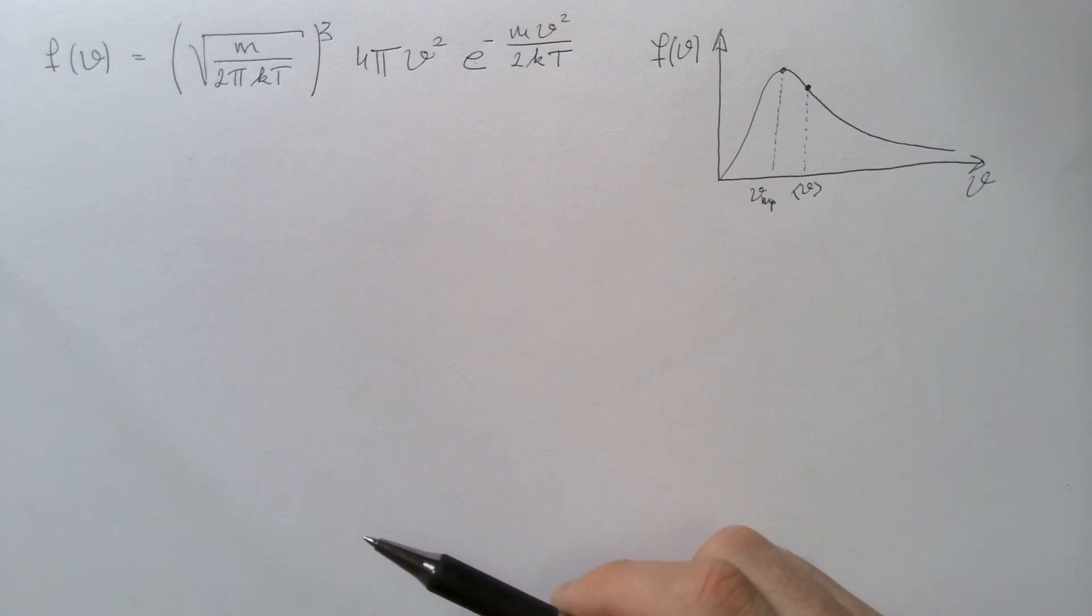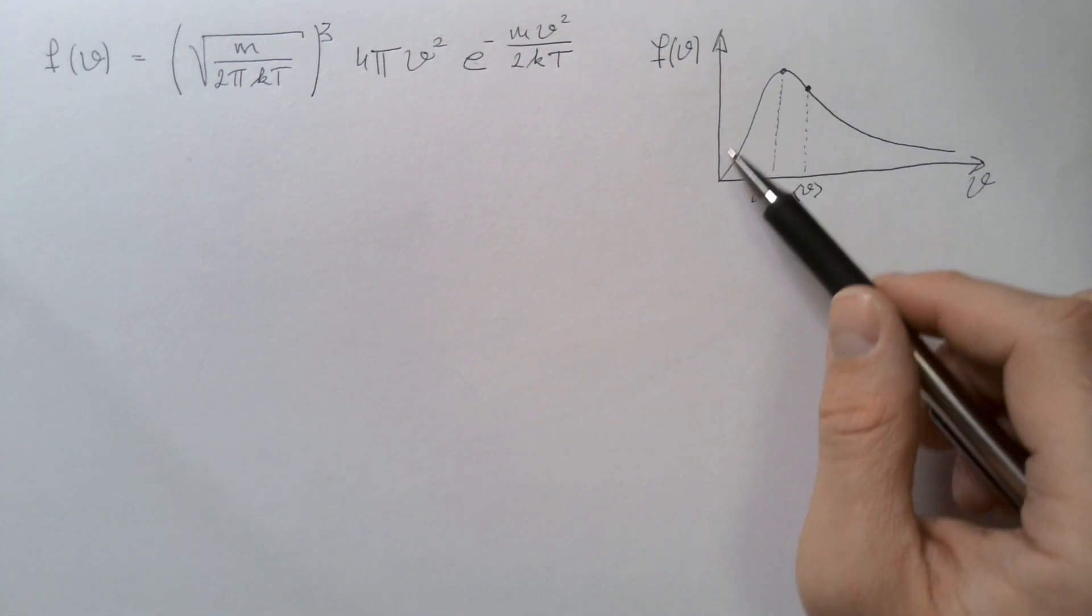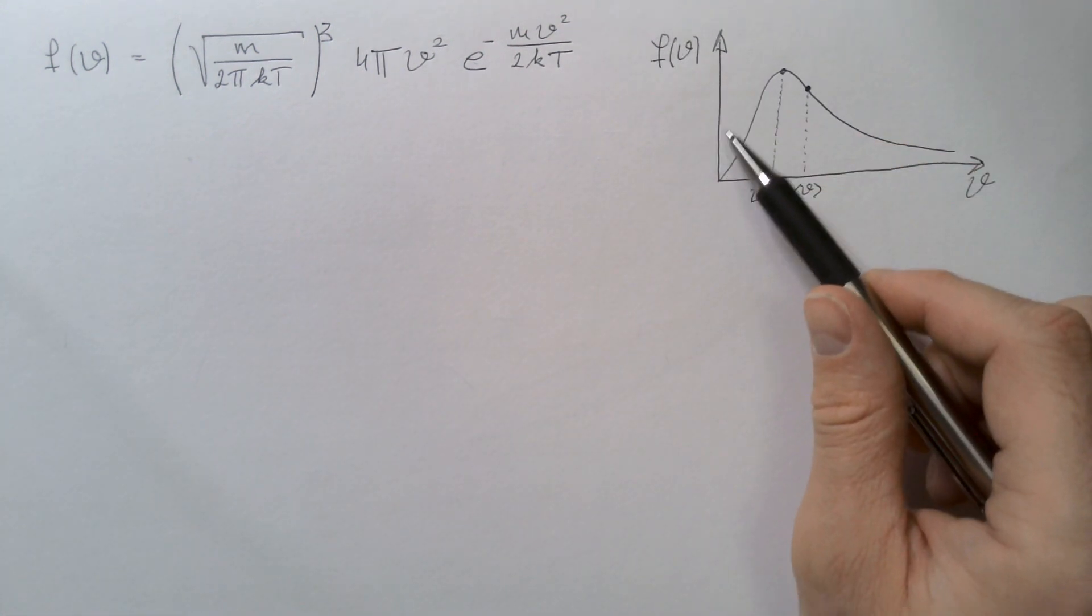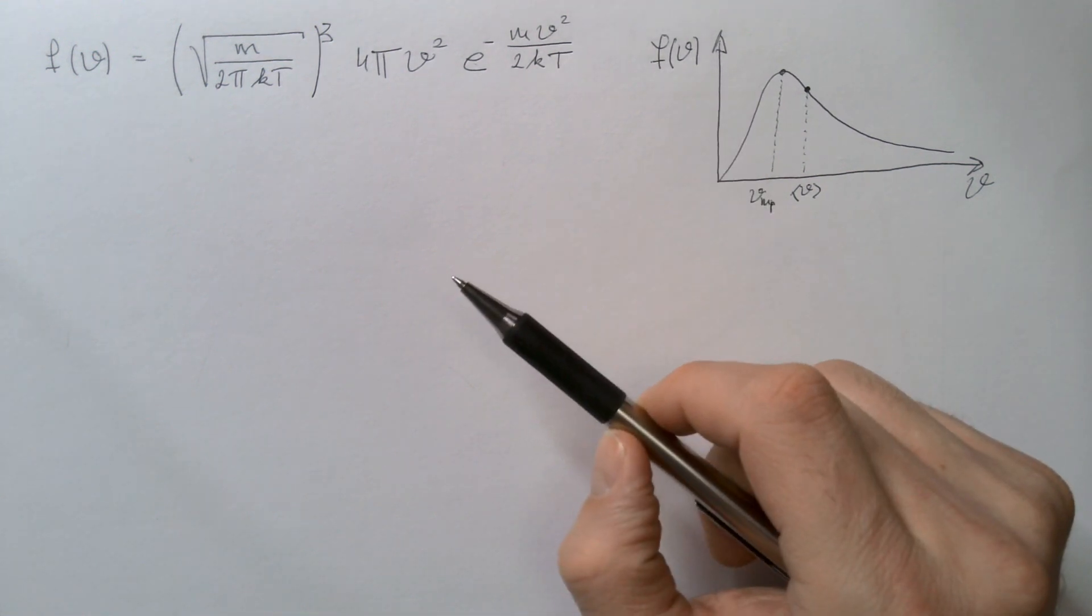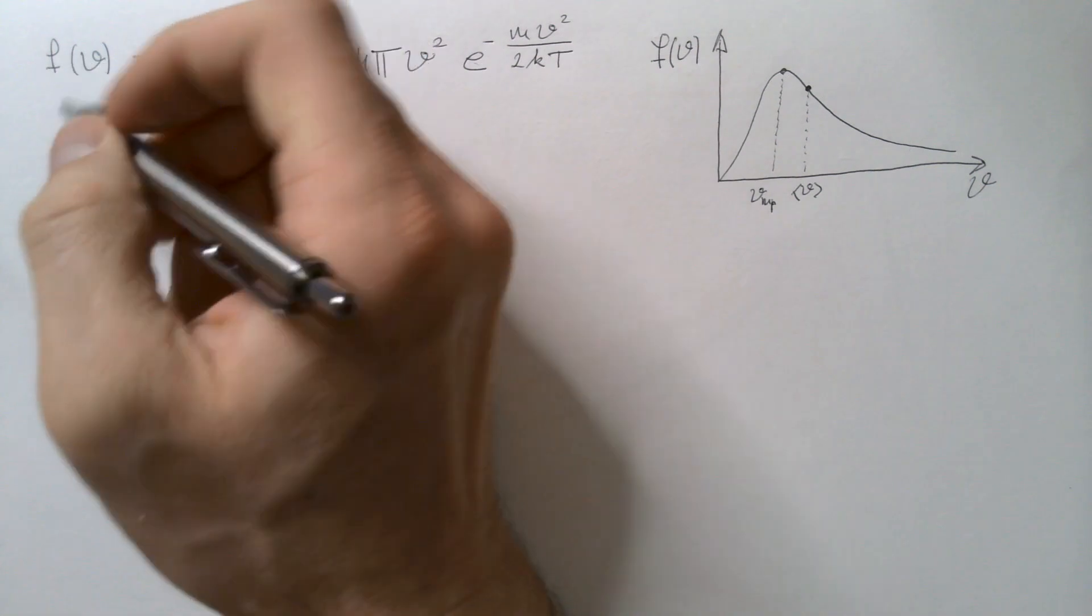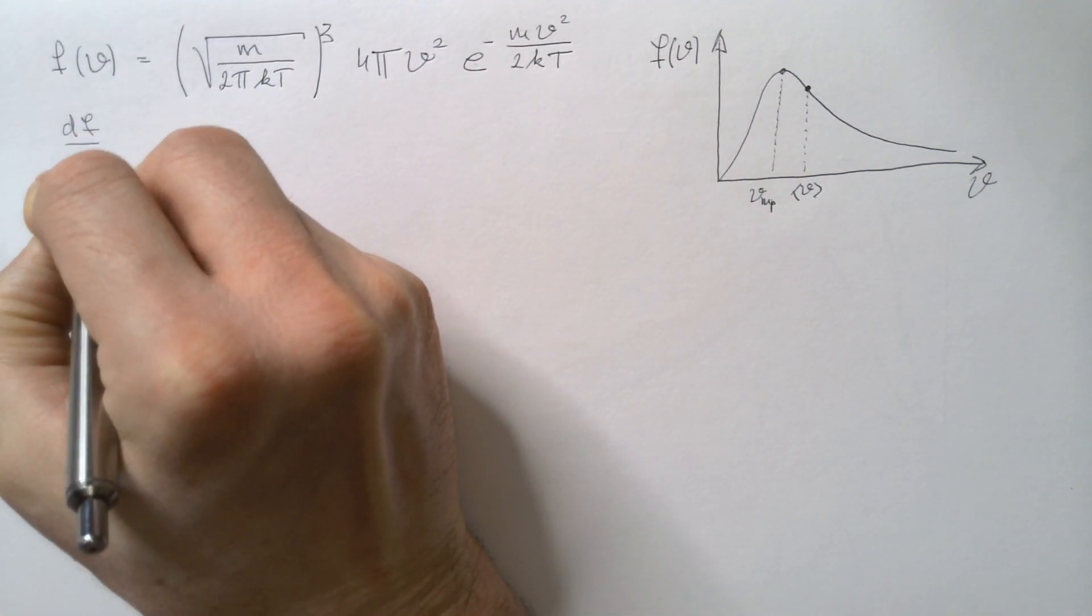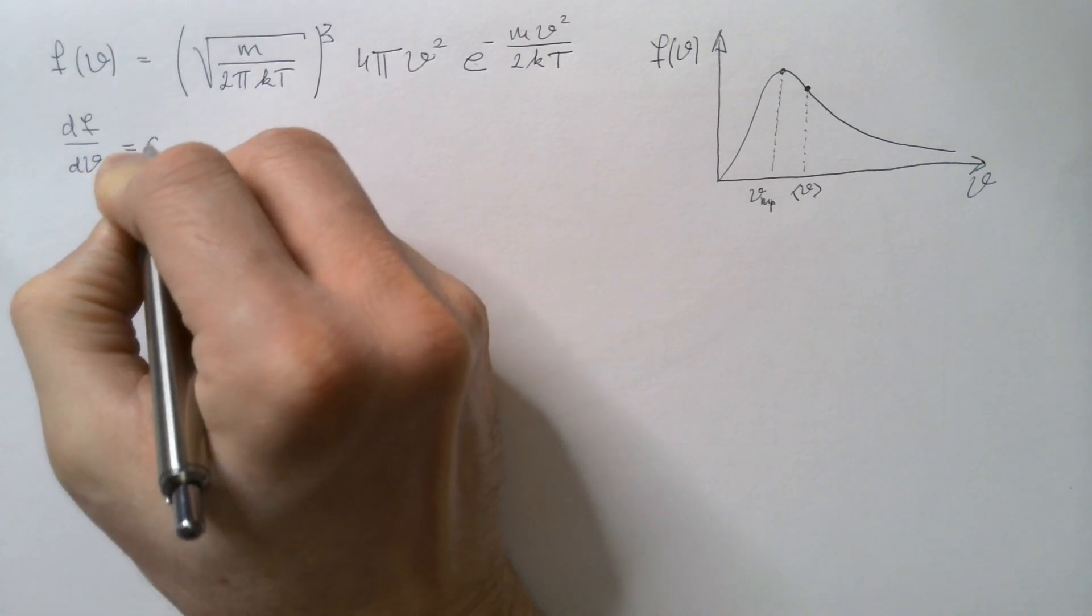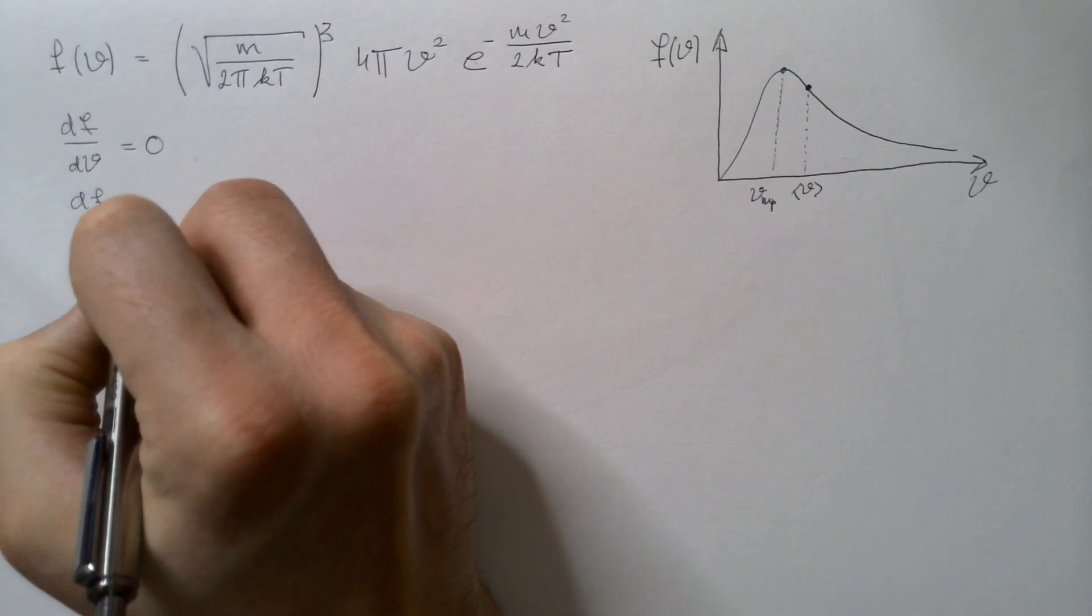Well, relatively easy. We will treat this problem just like any mathematical function. We see this is the maximum of our function f(v), so we will take derivative of f with respect to v, and set it equal to 0. In other words, we will have df/dv, and we set that equal to 0.